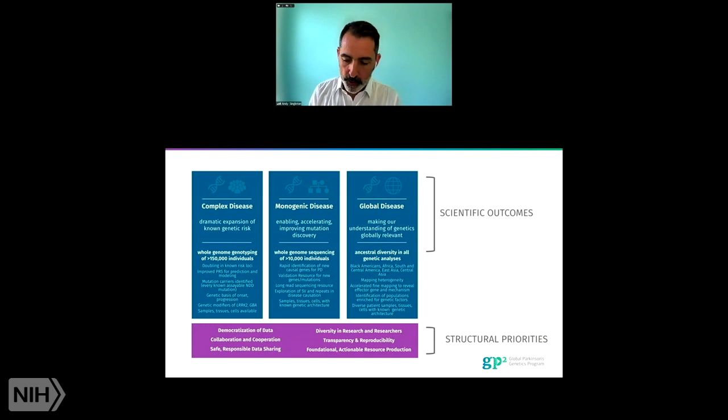So we have three primary scientific outcomes that we're attempting to attack. Understand the complex disease. So we're genotyping 150,000 individuals, identifying and proving rapidly new genetic causes of disease. So to do this we'll be whole genome sequencing 10,000 individuals and long read sequencing a couple of thousand individuals and doing all of this and making all of this globally relevant. So prioritizing collection of new samples and new cohorts, creation of new cohorts from black Americans, sub-Saharan Africa, North Africa, South and Central America, the Caribbean, East Asia, Central Asia. As important, I think, as anything to achieve these scientific outcomes, we have these really strong structural priorities. So democratizing the data, making data available and usable for the research community and for the folks that are actually generating samples. Collaborating and cooperating with everybody. The idea again is to create a structure in which really a collective where investigators from all over the world have equal access to resources and are able to analyze data.